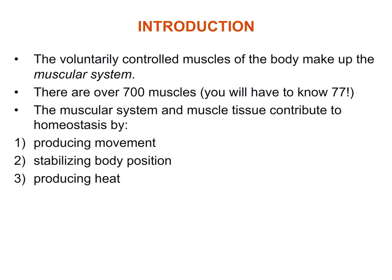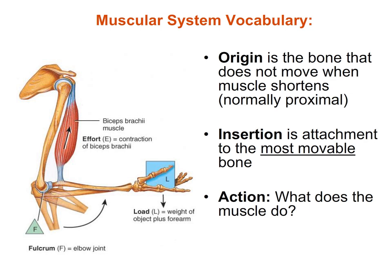On the exam, you will be responsible for identifying the 70 to 80 muscles selected, along with their origin, insertion, and action. The origin of a muscle is the part that connects to a bone that does not move very much when that muscle contracts. Normally the origin is located proximally — closer to the point of attachment on the body. The insertion, on the other hand, is the attachment to a bone that is very mobile.